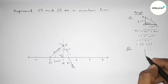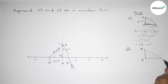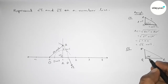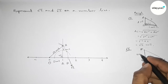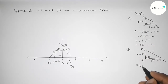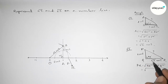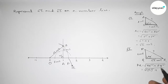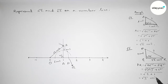Next we have to represent root 3 on the number line. Roughly drawing a right angle triangle PQR where this angle is 90 degrees. If we take the base equal to root 2 units and the height equal to one unit, then by Pythagoras theorem, the hypotenuse equals root over base squared plus height squared. That gives root over root 2 squared plus one squared, which is root over 2 plus 1, so this is root 3 units.